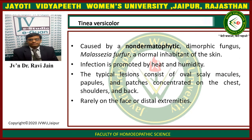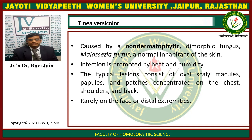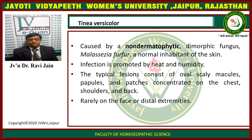Next, we come to tinea versicolor. Tinea versicolor is a non-dermatophytic, dimorphic fungus — Malassezia furfur — a normal inhabitant of the skin. The infection is promoted by heat and humidity. The typical lesion consists of oval, scaly macules, papules and patches concentrated on the chest, shoulders and back, and rarely on the face or distal extremities.